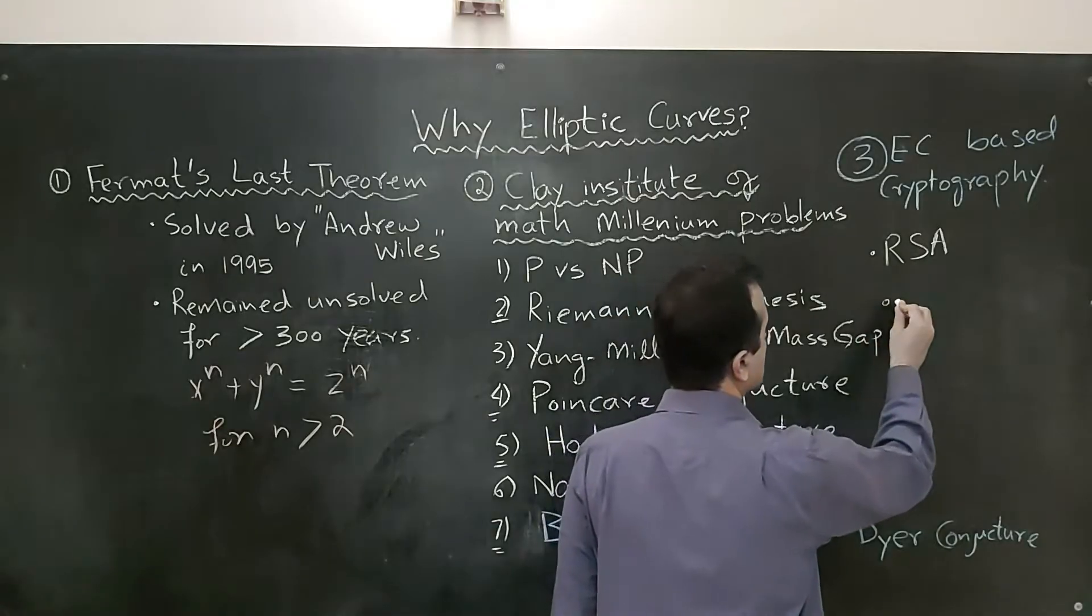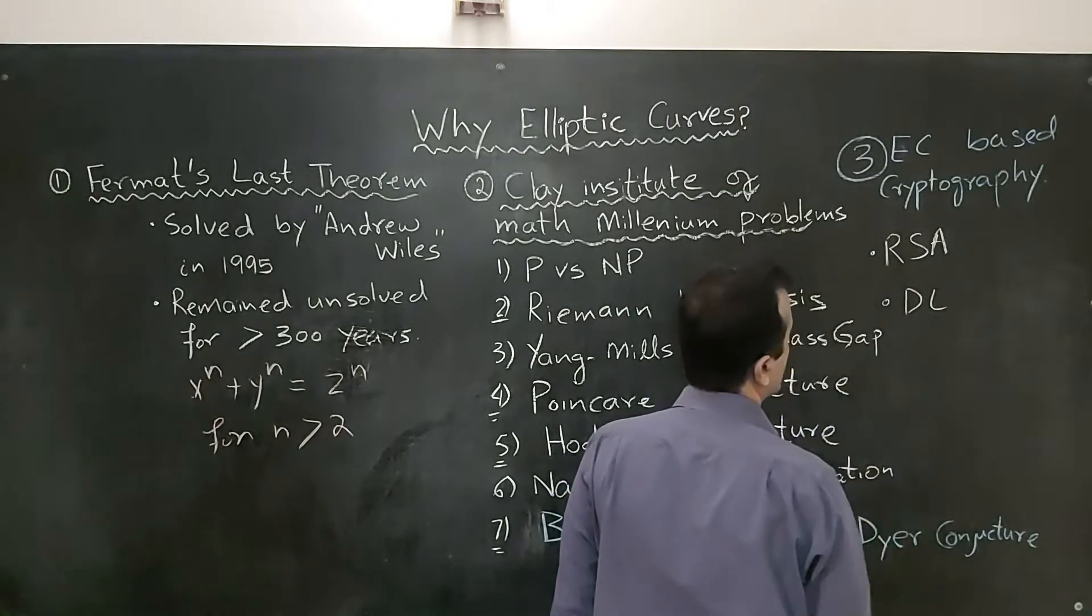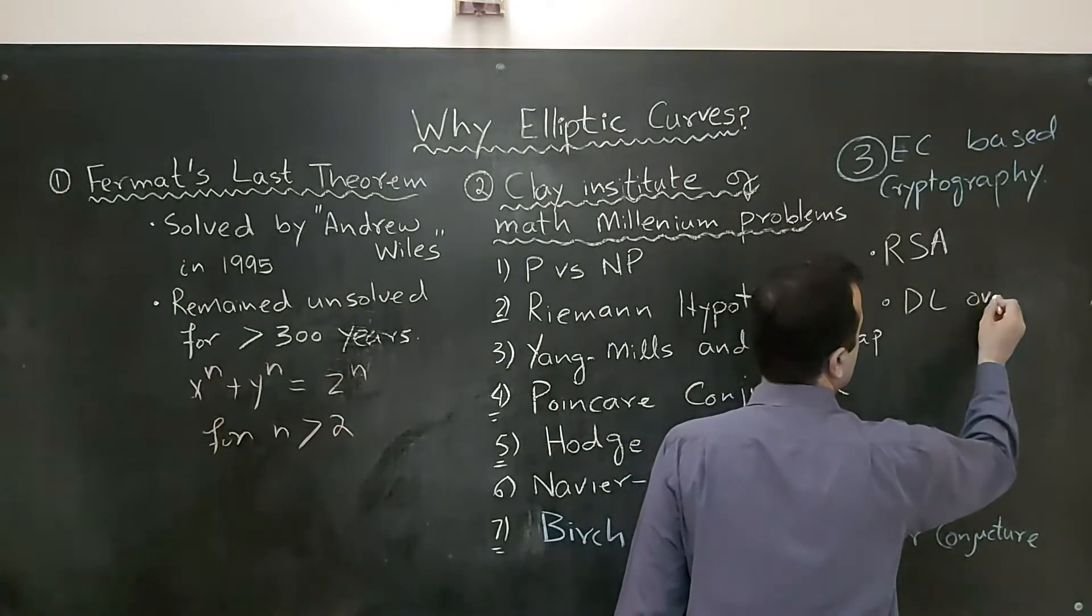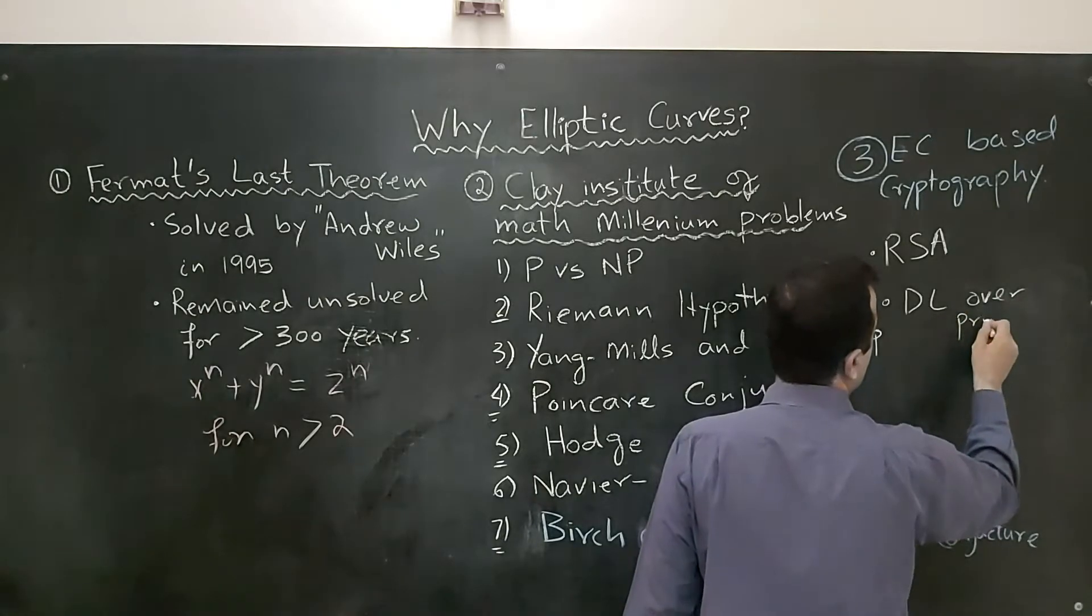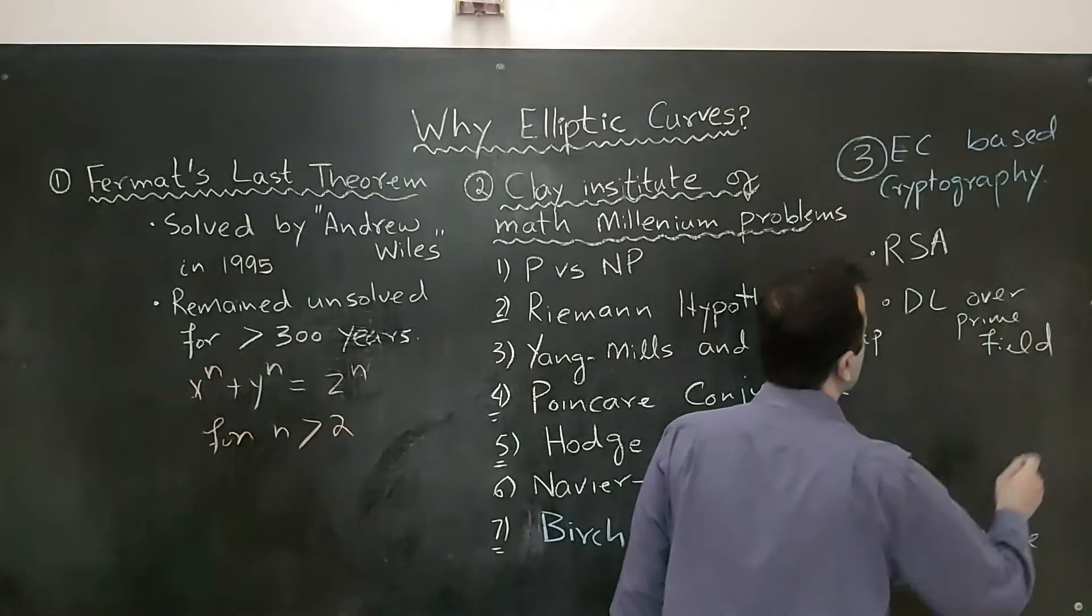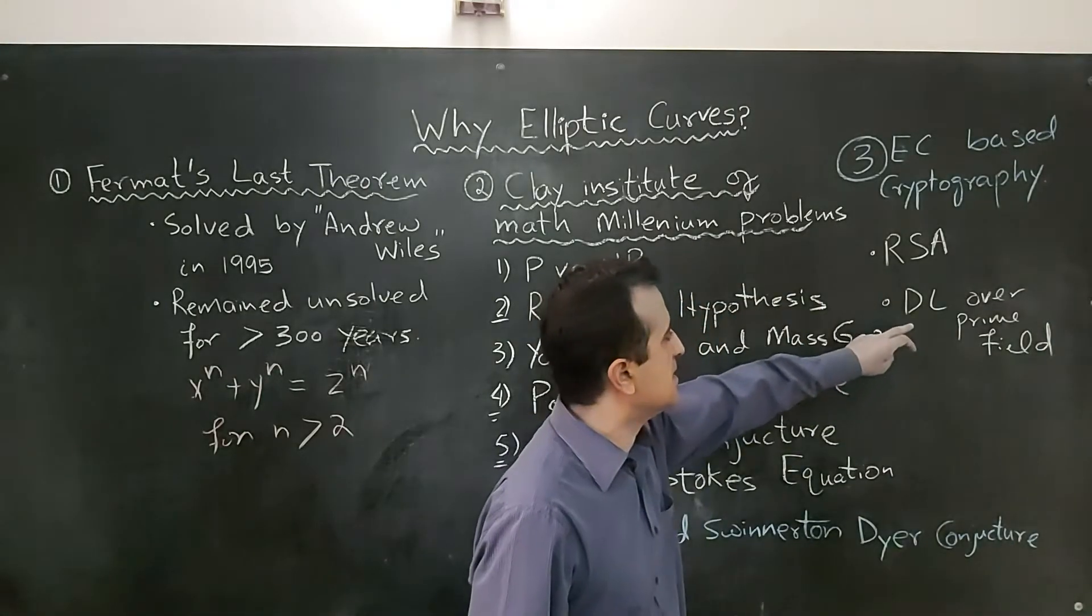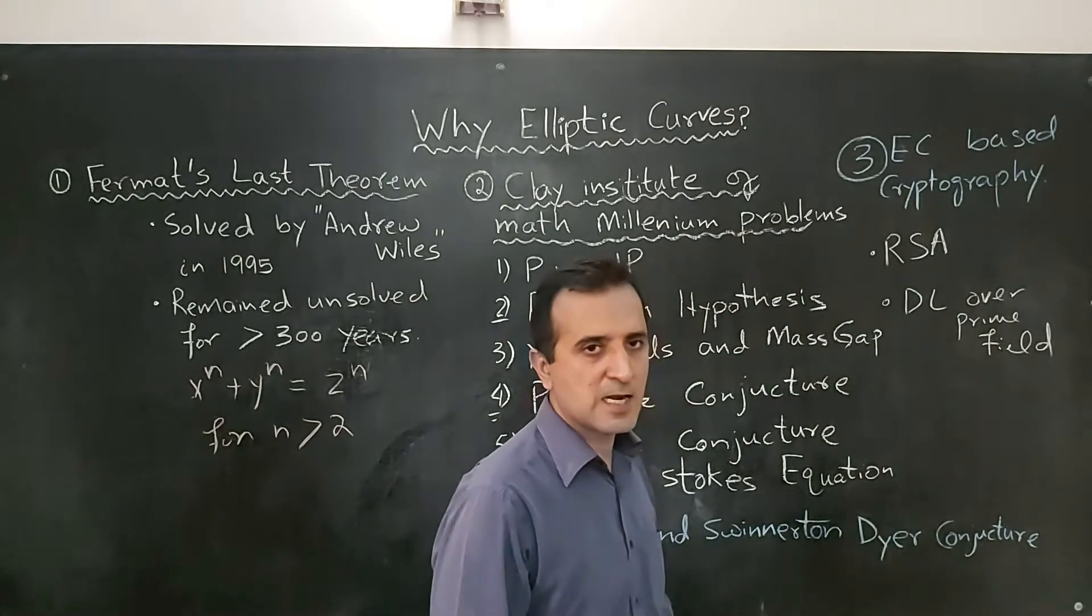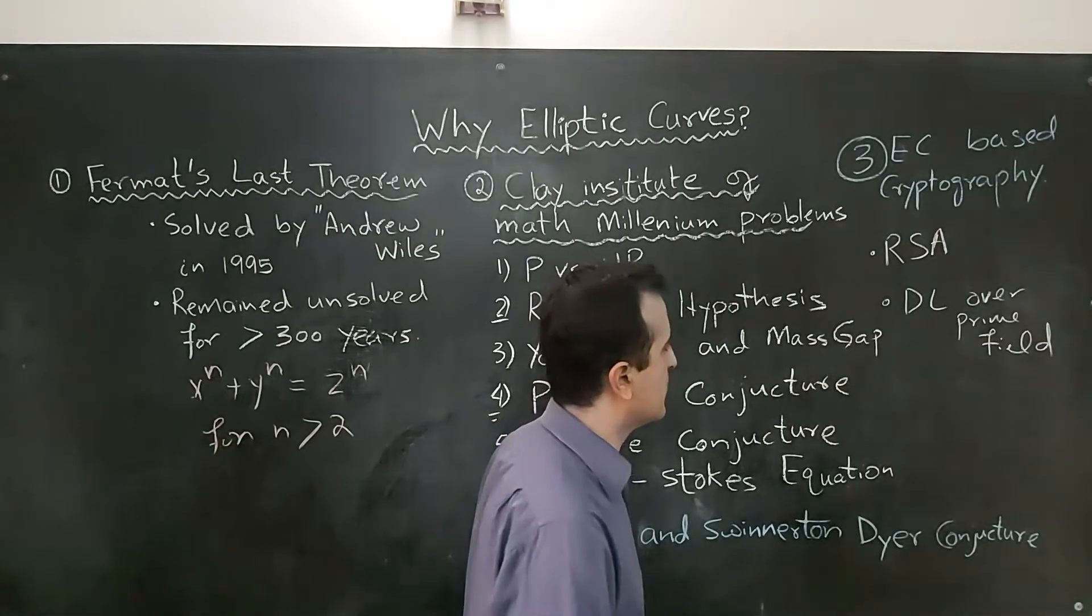Similarly, discrete logarithmic problem over prime fields also has to use a very large key size because of the general number field sieve problem.